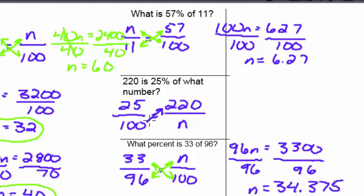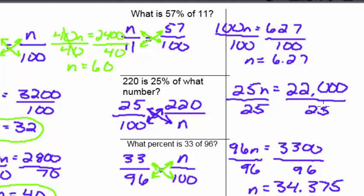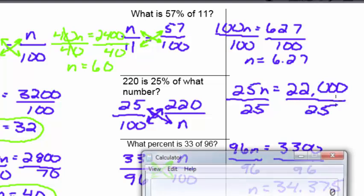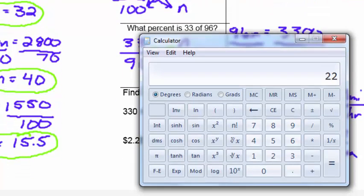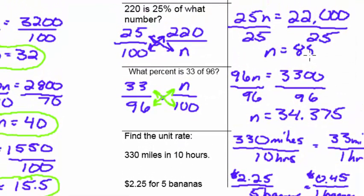We're going to cross multiply here, which will give us 25n equals 22,000. Divide both sides by 25. 22,000 divided by 25. N, in this case, equals 880.